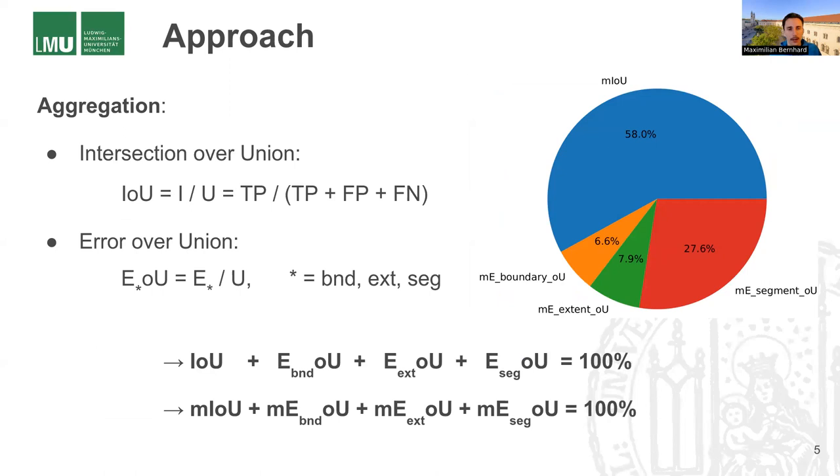So after we have assigned every pixel to one of these categories, we want to summarize these categories in some statistics or error metrics. And we do this also similar to intersection over union by considering the error over union. So we simply divide the number of pixels in each category by the union, which is the sum of true positives, false positives, and false negatives.